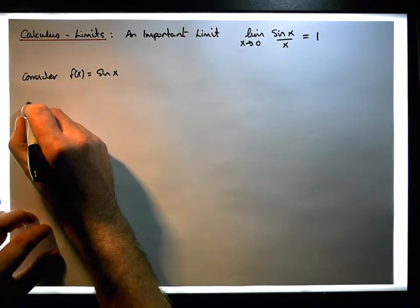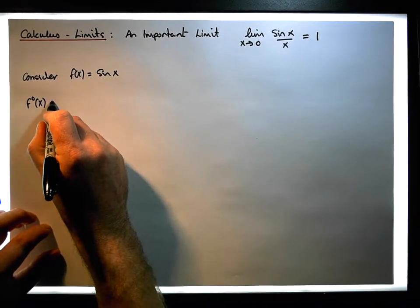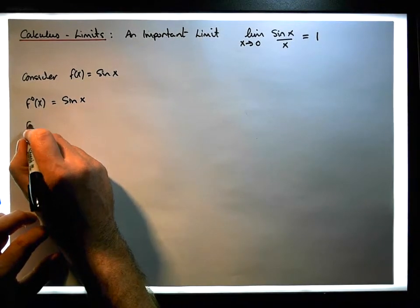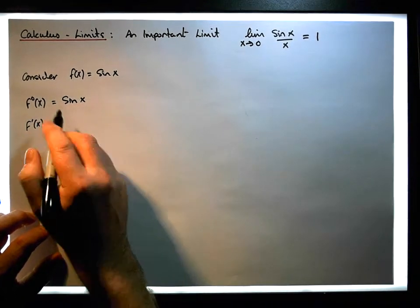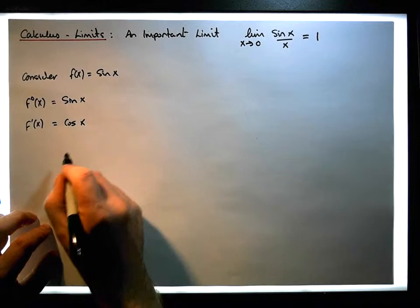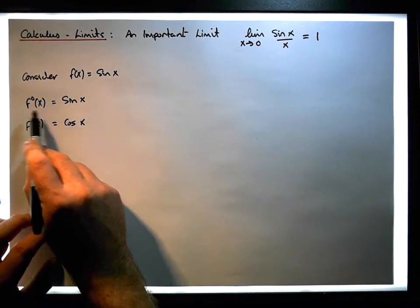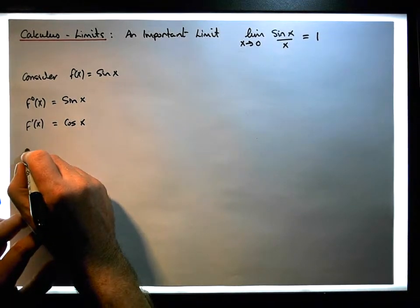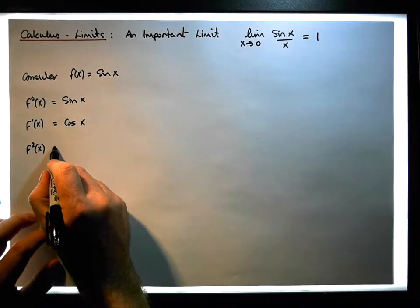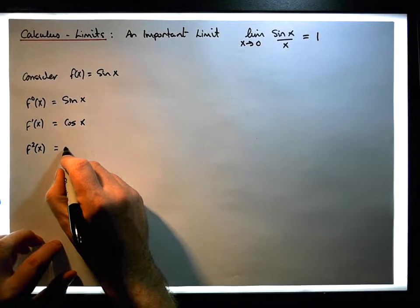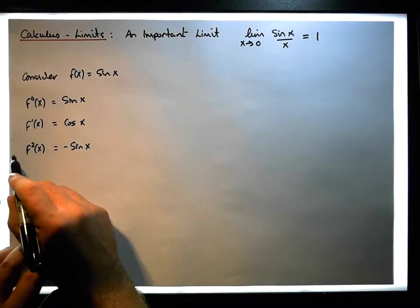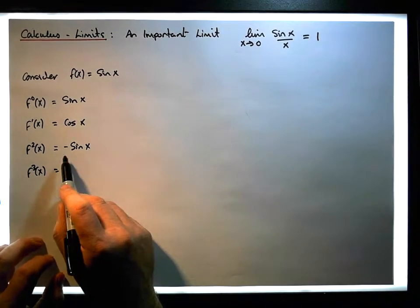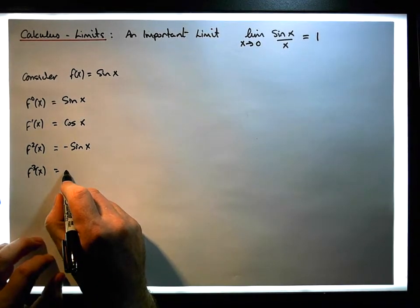This function can be written as f0 of x, simply equal to sine x. The first derivative, f1 of x, is cos x. The second derivative, f2 of x — the derivative of cos x — is minus sine x. Then the third derivative, f3 of x, is the derivative of minus sine x, which gives us minus cos x.